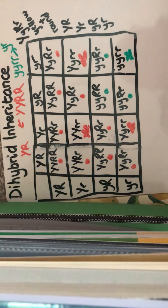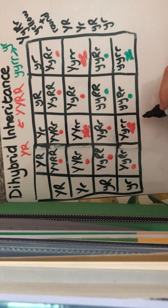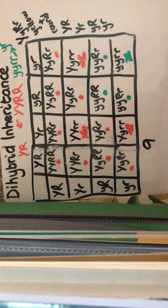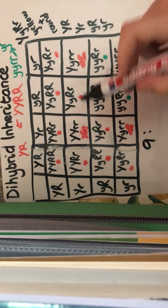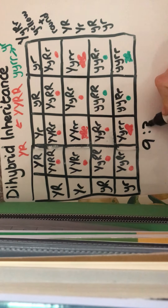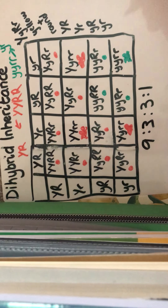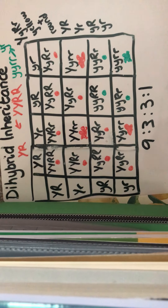So here we can see how Mendel's ratio has been formed. We can count nine showing yellow and round, three showing yellow and wrinkled, three showing green and round — those are showing one dominant trait and one recessive trait — but there's only one showing both recessive traits, green and wrinkled. That's how the nine to three to three to one ratio is established. And this dihybrid inheritance is the same for any two characteristics that are inherited together. That's everything for this — thank you for watching.